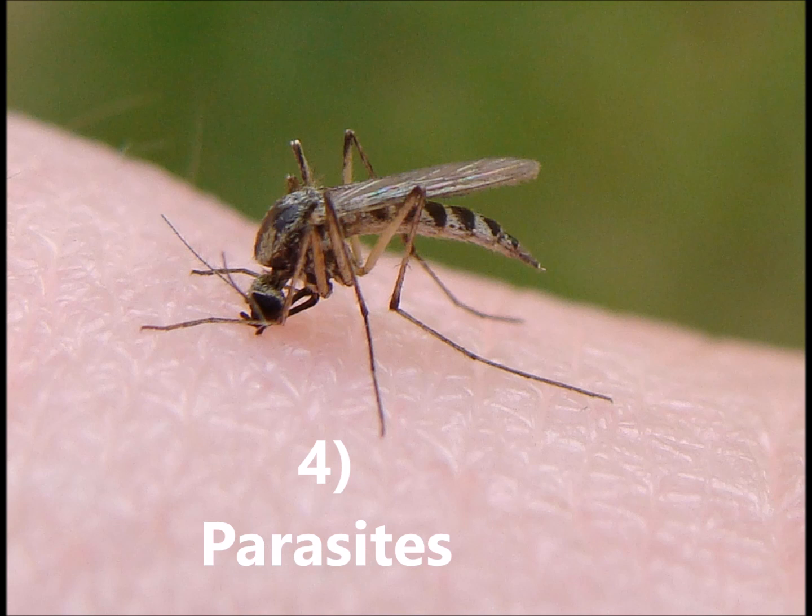Parasites are consumers that actually live off another living thing. They take nutrients and harm the other living thing, which is called the host. Examples of these annoying critters are mosquitoes, lice, fleas, leeches, and tapeworms. Yuck!